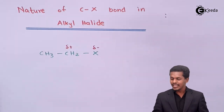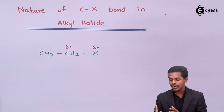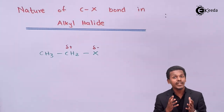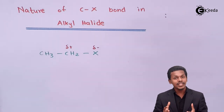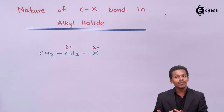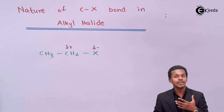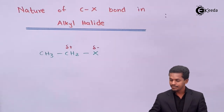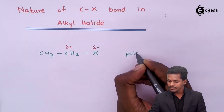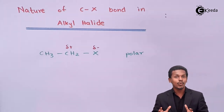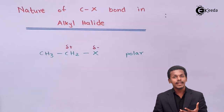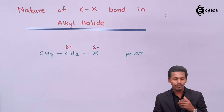This is because of the electronegativity difference created between the carbon and the halogen atom that are bonded with each other. Therefore, these kinds of compounds are polar in nature. They are acting like a polar solvent as well.